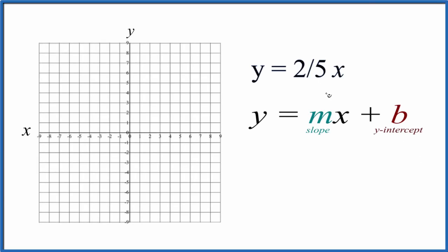In this video, we'll graph the linear equation y equals two-fifths x. We're going to use slope intercept form to do this. So we have y equals mx plus b, but we don't have b up here. We can just say plus zero. That works.